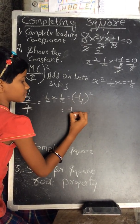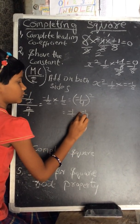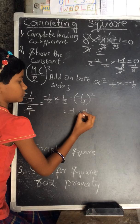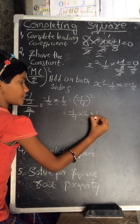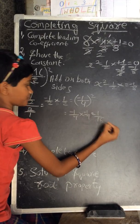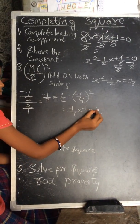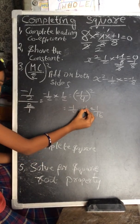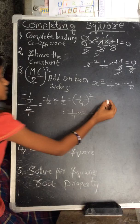Now square it: minus 1 by 4 squared equals 1 by 16. That means 1 times 1 is 1, and minus into minus is plus. 4 times 4 is 16, so 1 by 16.